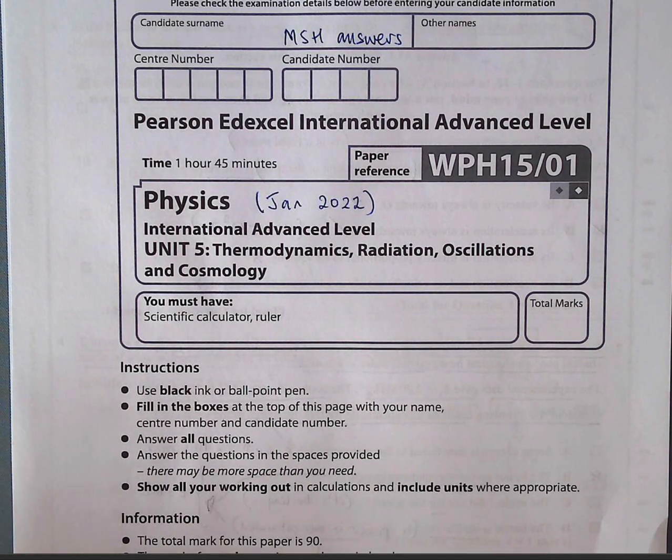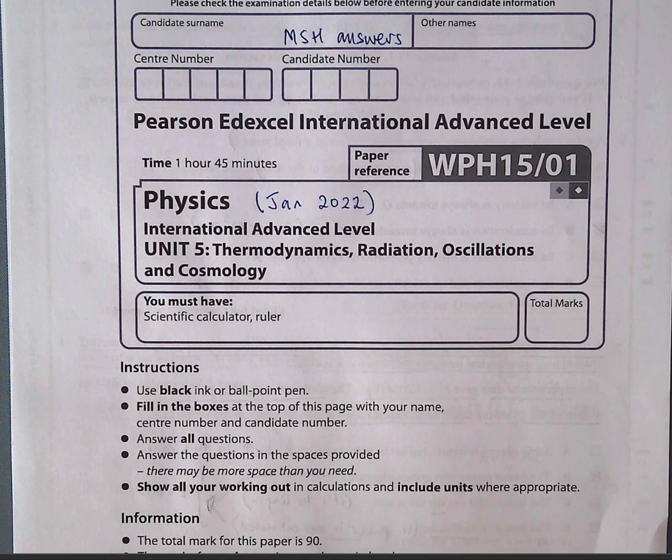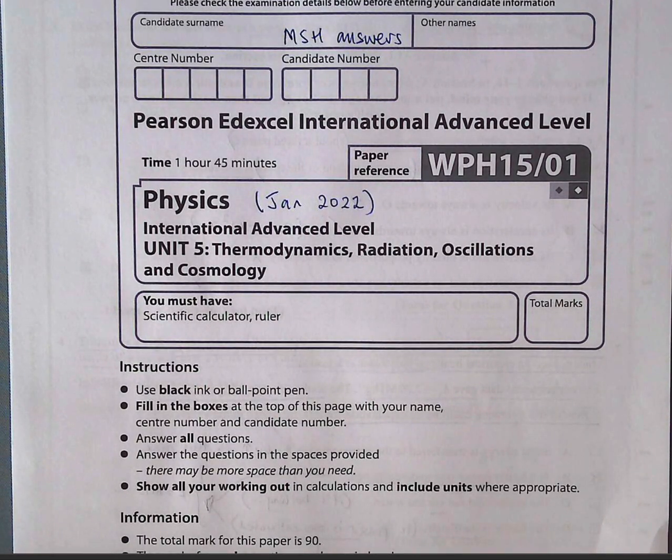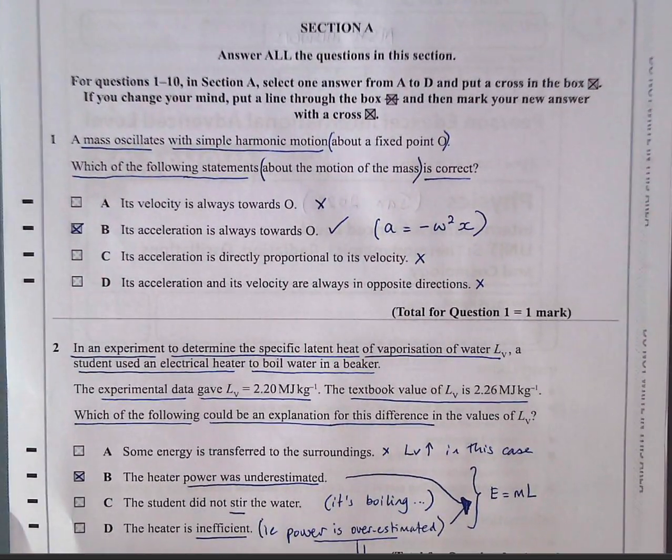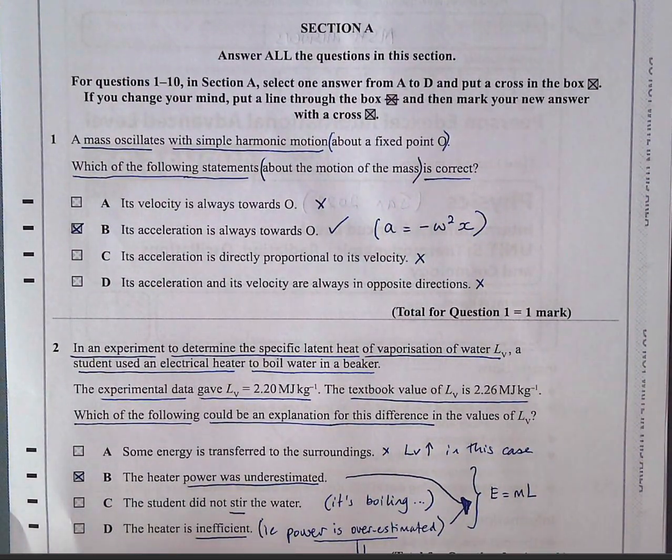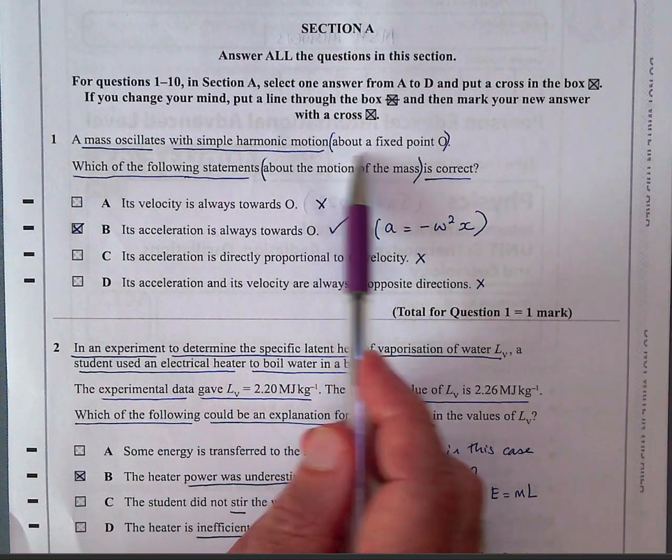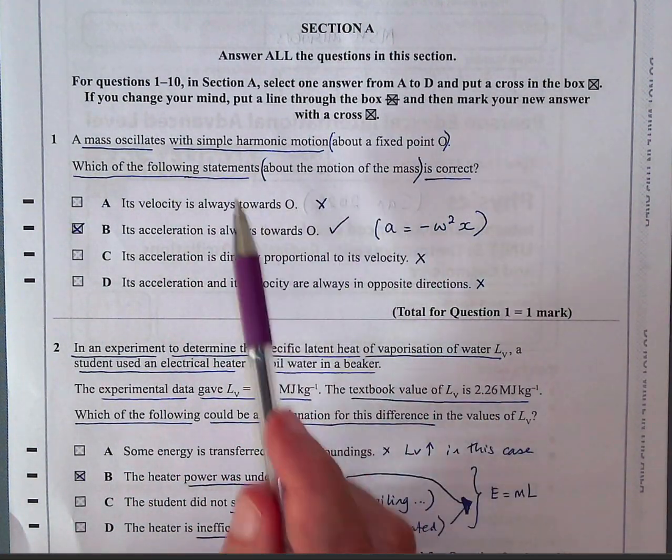This is to help students prepare for their module exam which is normally in June, and the later papers 23, 24 I will do later closer to the exam date as many teachers use the later exams for practice mock exams. The first section starts with multiple choice section A. Question 1 says a mass oscillates with simple harmonic motion about a fixed point O.